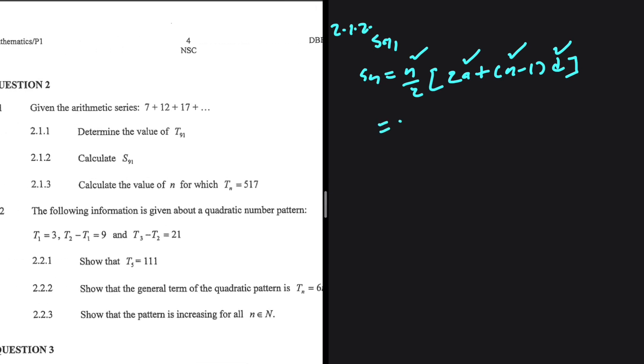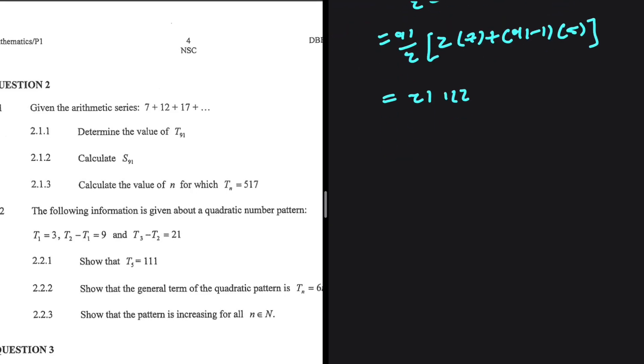This will be equals to 91 divided by 2 multiplied by 2 multiplied by A, which happens to be 7, the first term plus N minus 1, so that will be 91 minus 1 multiplied by the common difference, which is 5. If you put this in your calculator, you're going to get 21,112. That is 2.1.2.